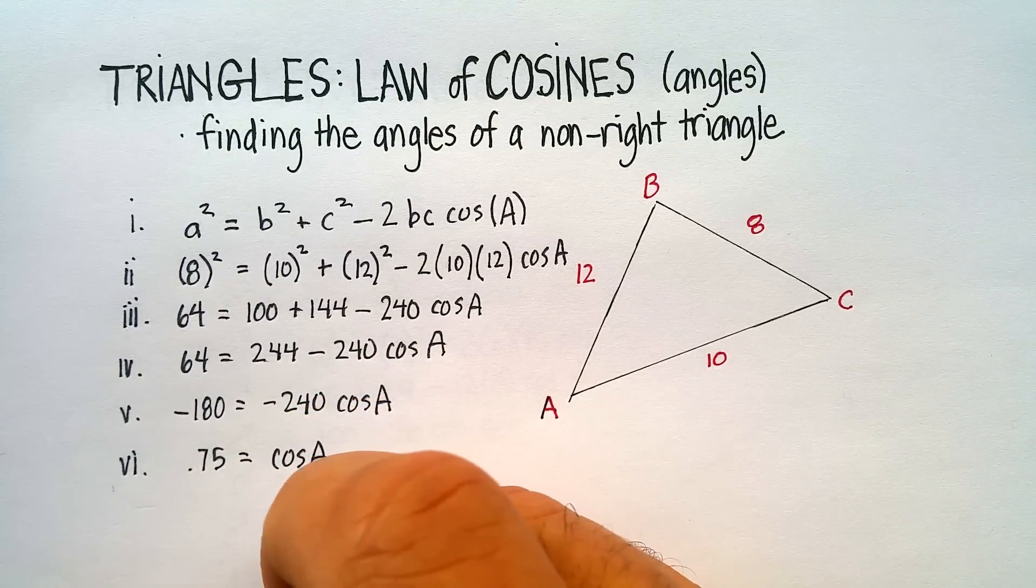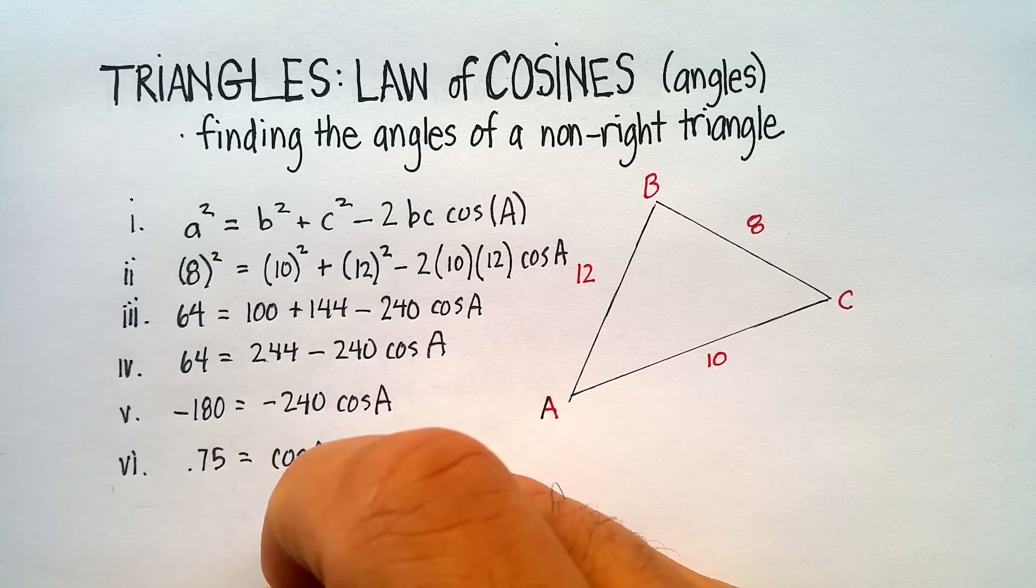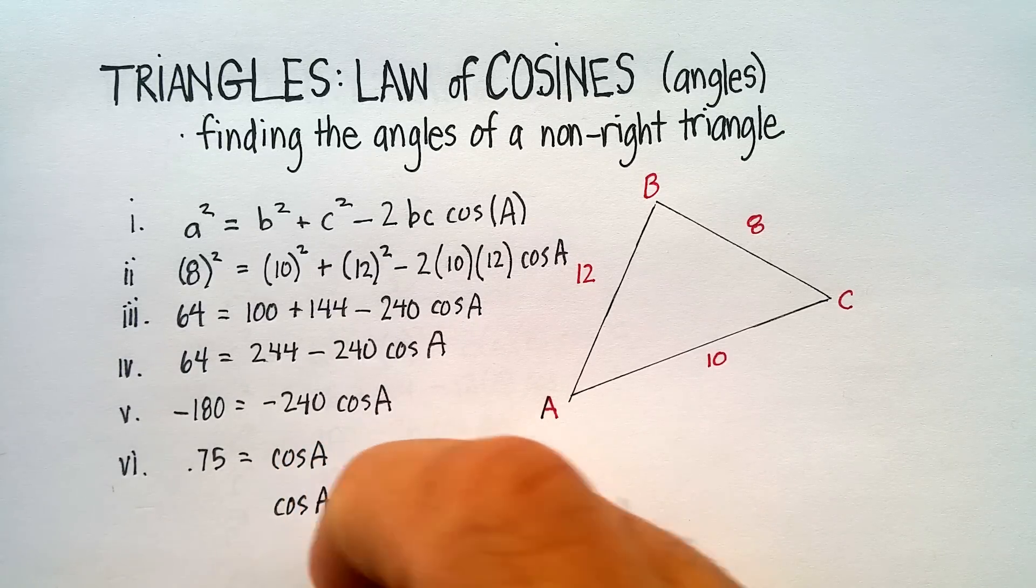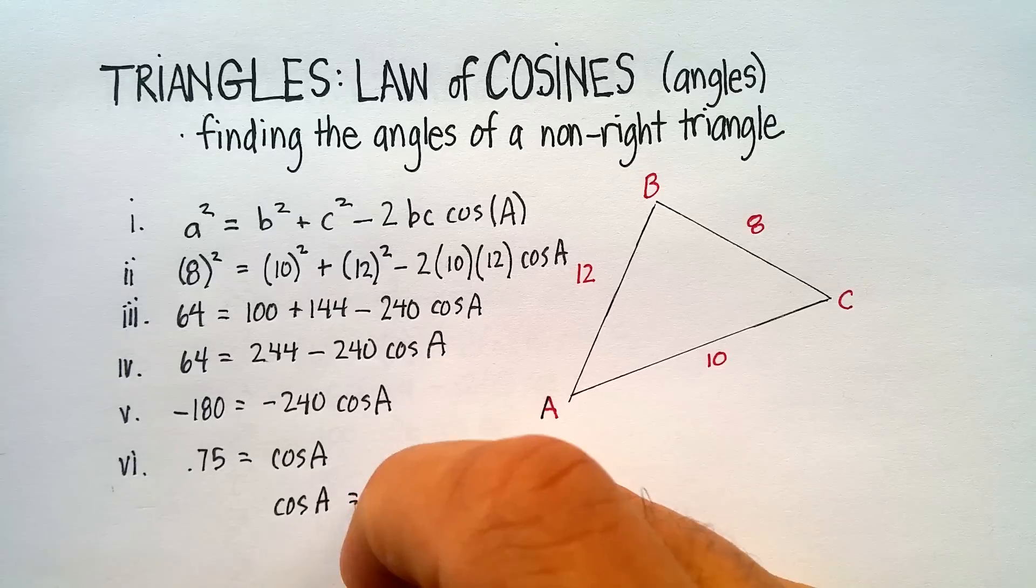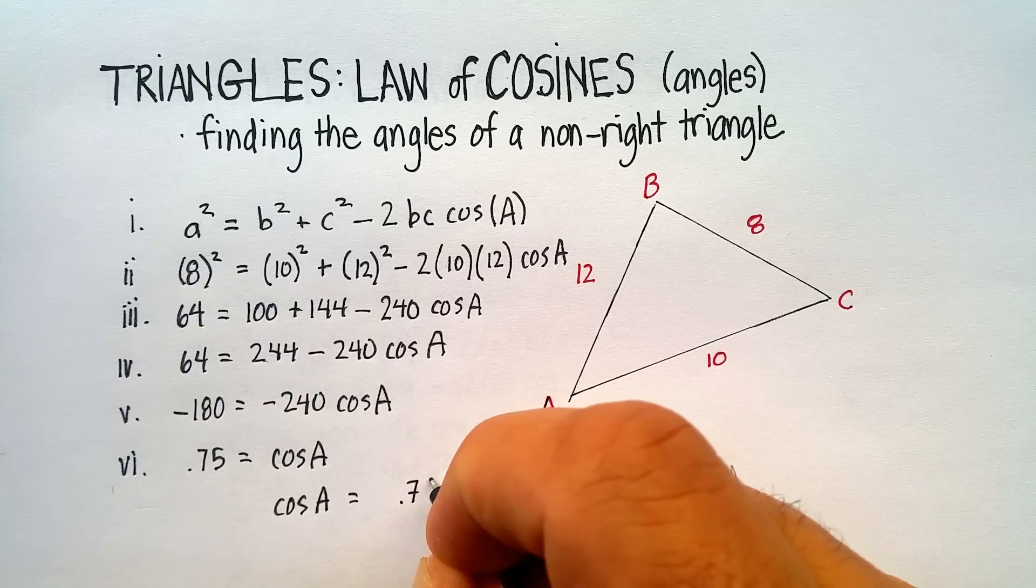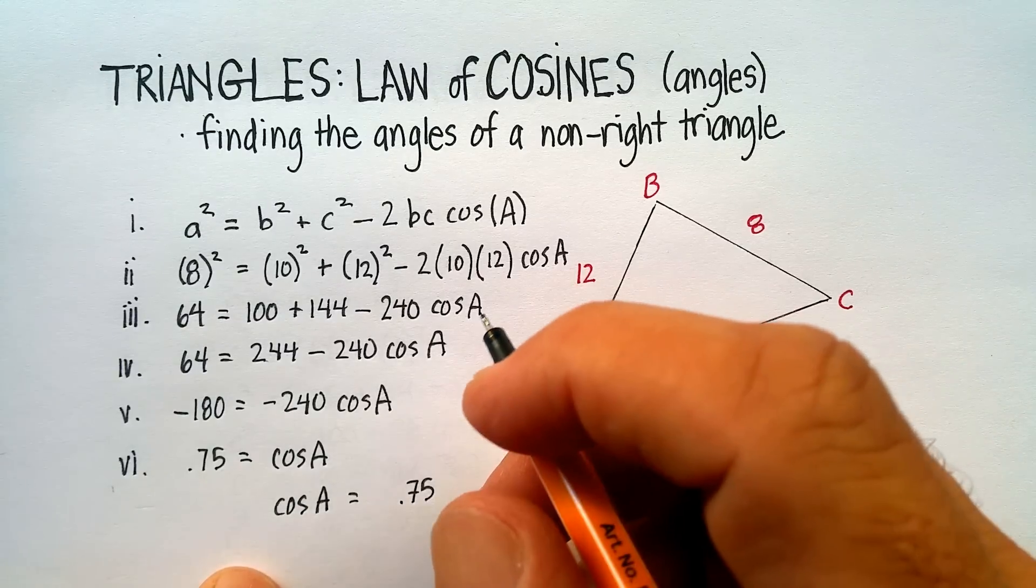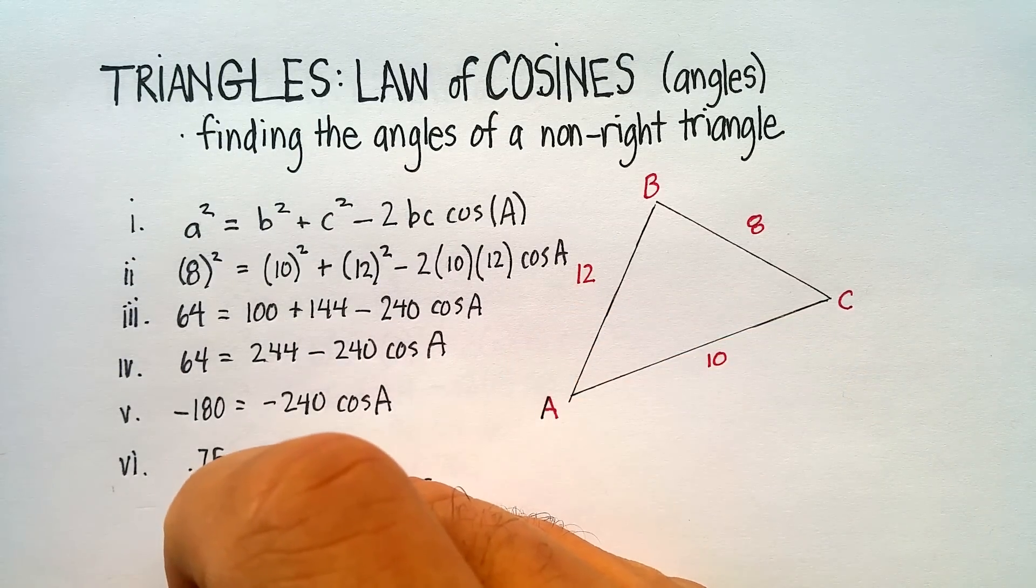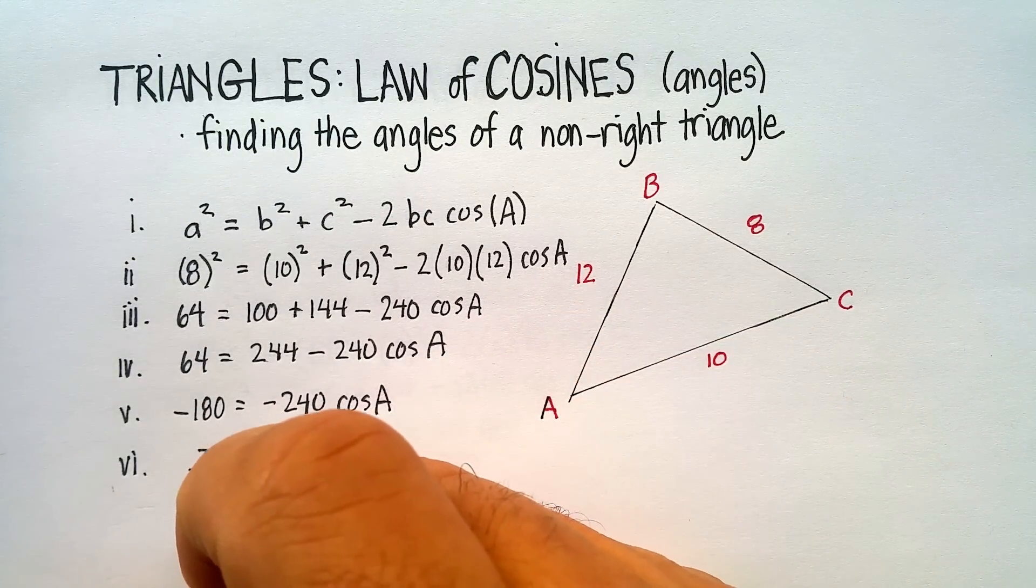Let's divide both sides by -240, and you get 0.75, and that would be positive because a negative divided by a negative. So cos A = 0.75. Let me just rewrite this: cos A = 0.75.